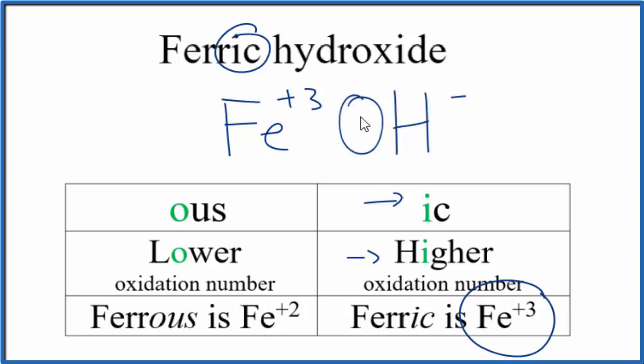At this point our charge doesn't balance and we know this is a neutral compound. Since the charge doesn't balance we need to fix that by changing the subscripts. We can use what's called the crisscross method.